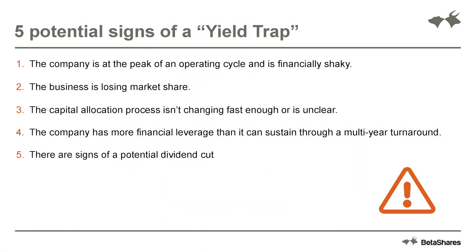What are some of the signs of a yield trap? Firstly, a company that is operating at the peak of its operating cycle could be subject to cyclical decline — maybe all of the good news is factored into that business. If a business is losing market share, that can be another sign that its dividend yield may not be sustainable into the future. If the capital allocation of a business is amiss, that could be another indication. Think perhaps of a fully mature business that has very few growth prospects — generally that's not a business you would want to own.